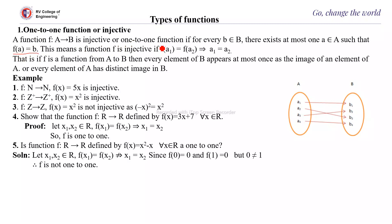This means that f is injective if f(a1) equals f(a2) implies a1 equals a2. So two elements, if they have the same image, must be the same element. That is, if f is a function from A to B, then every element of B appears at most once as an image of an element of A, or every element of A has a distinct image in B.